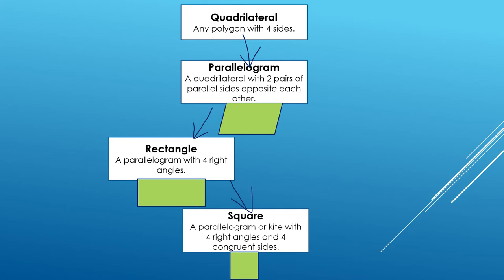All quadrilaterals are not parallelograms. Some are trapezoids or kites. All parallelograms are not rectangles. Some are rhombuses. All rectangles are not squares. Some don't have four congruent sides.